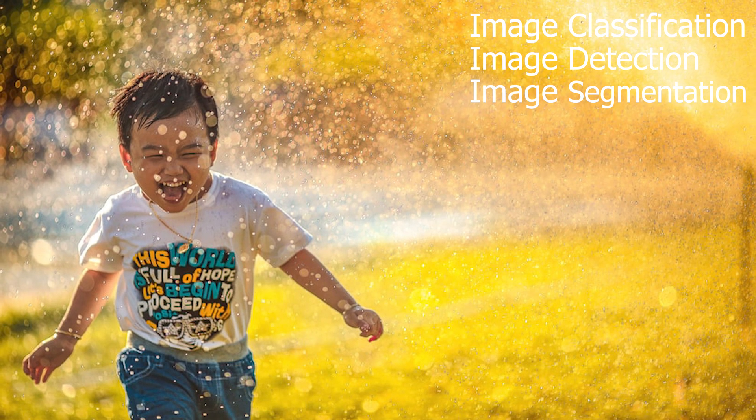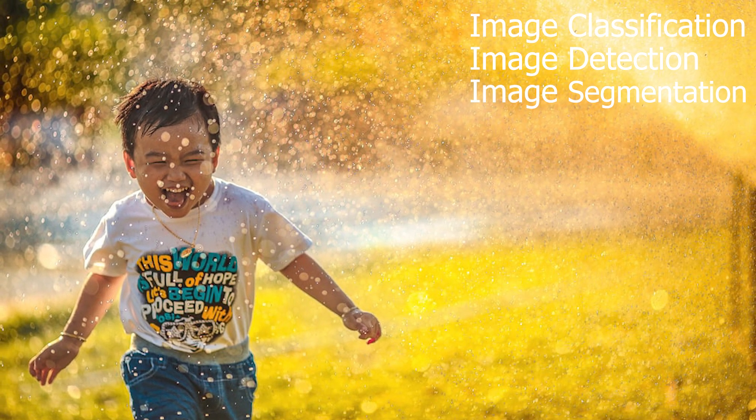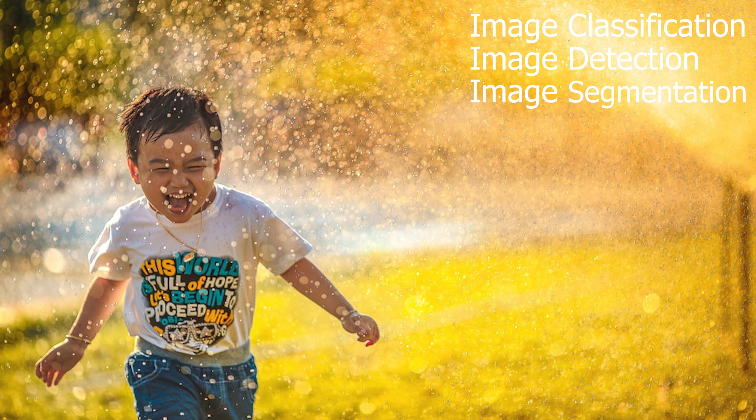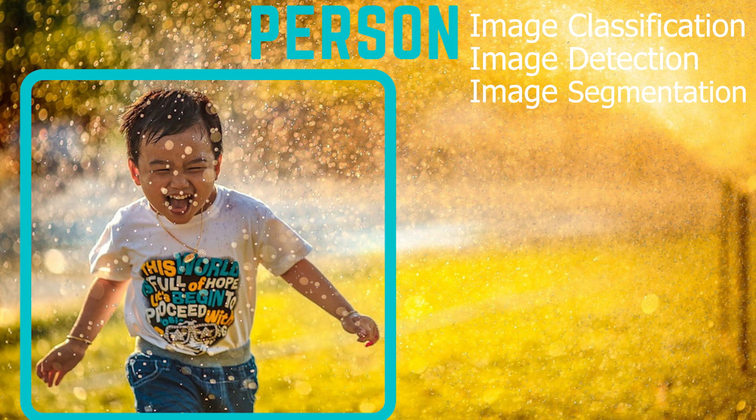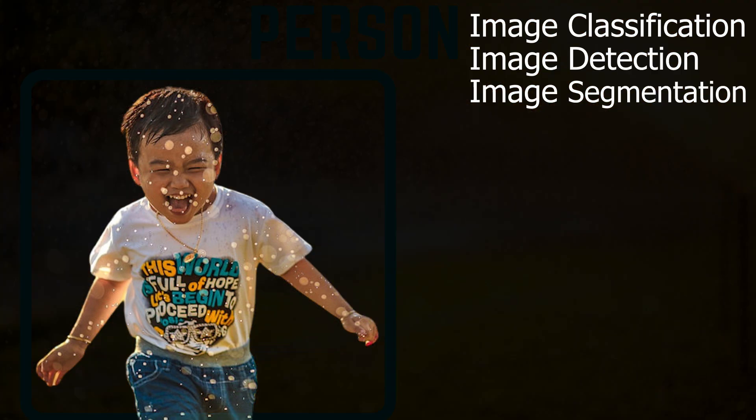These three tasks iteratively deepen our understanding of what's going on in an image. In the same order, classification tells us what's in the image, detection tells us where it is approximately, and segmentation precisely tells us where it is.